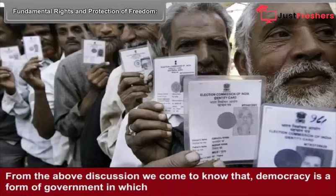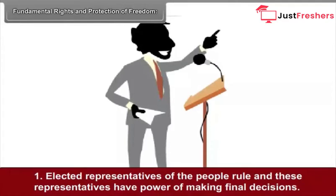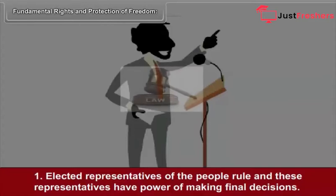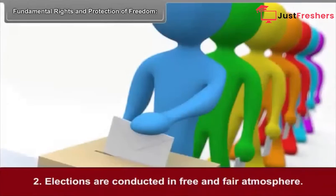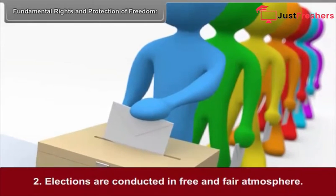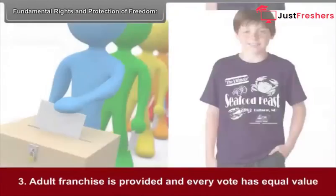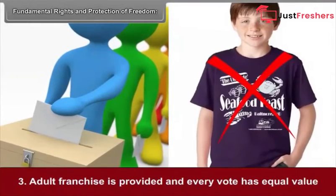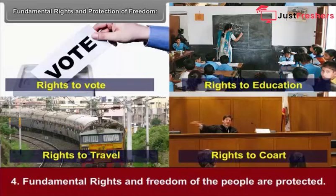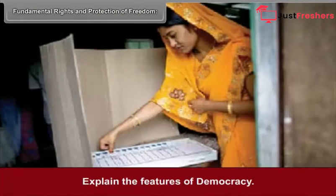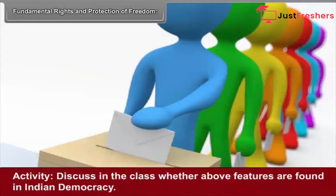From the above discussion, we come to know that democracy is a form of government in which: first, elected representatives of the people rule and these representatives have the power of making final decisions; second, elections are conducted in a free and fair atmosphere; third, adult franchise is provided and every vote has equal value; fourth, fundamental rights and freedom of the people are protected. Discuss in class whether these features are found in Indian democracy.